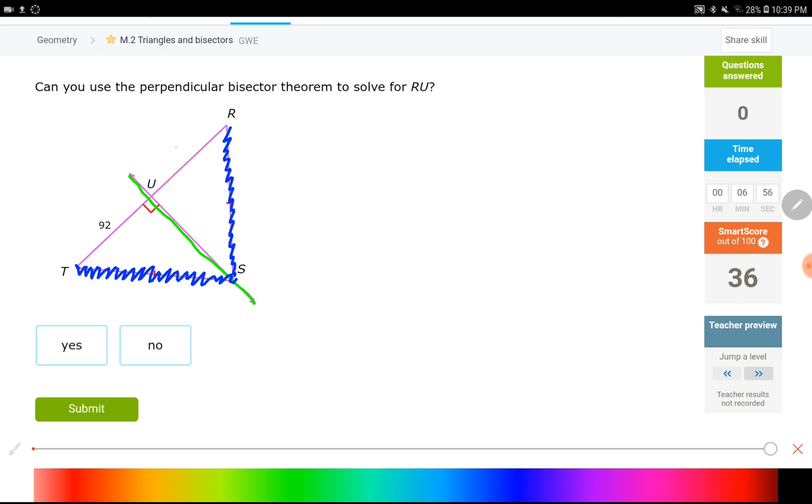If that was our question, we would say RU is 92, but the question says, can you use the perpendicular bisector theorem to solve for RU? Yes, we can, and that's how we do it.